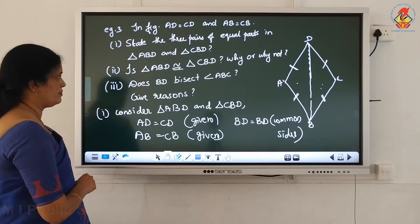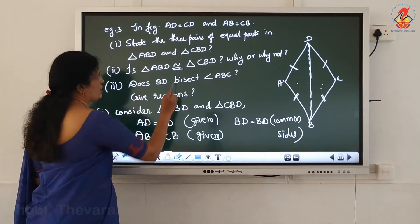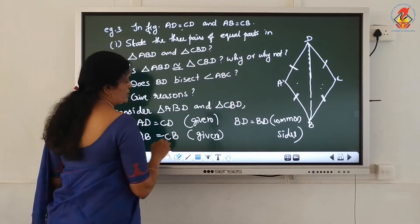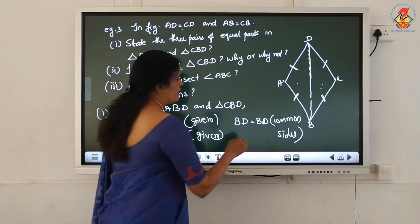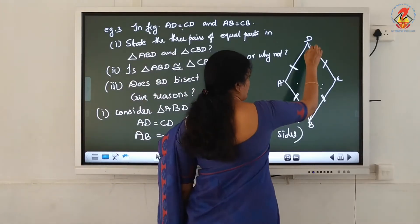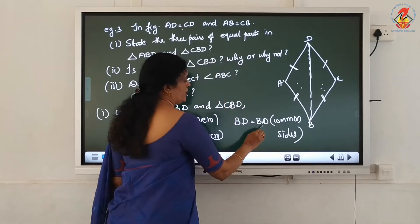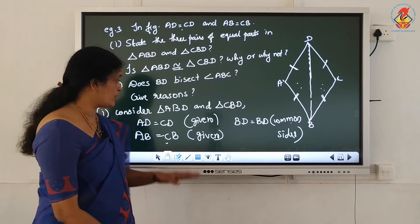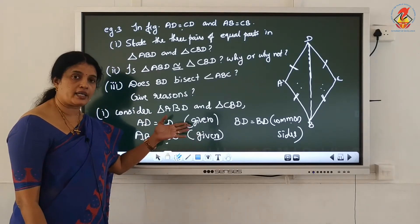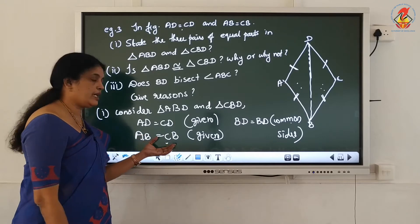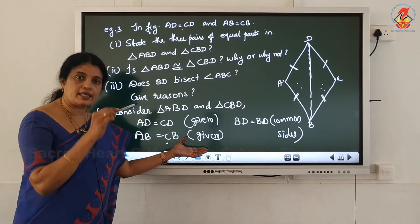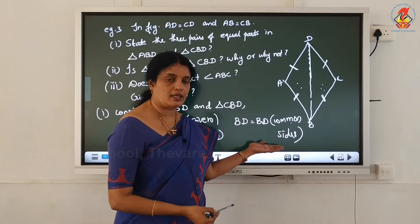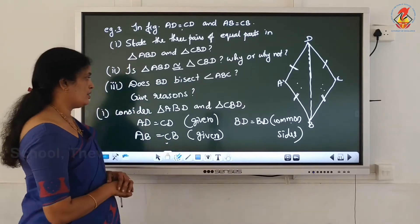Therefore, these are the 3 pairs of equal parts in triangle ABD and triangle CBD. First: AD equal to CD, already given in the question. Second: AB equal to CB, already given in the question. Third: BD equal to BD - reason: common side. You should write the reason inside the bracket. So write the reason 'given' for AD equal to CD and AB equal to CB, and 'common side' for BD equal to BD.